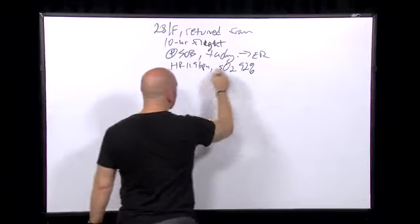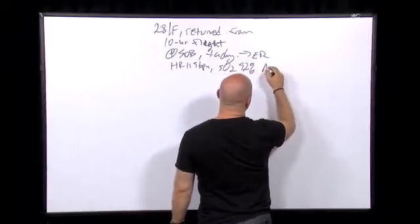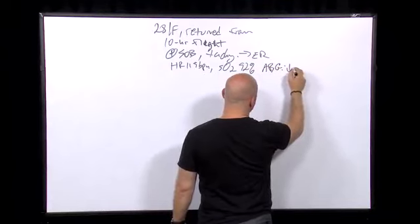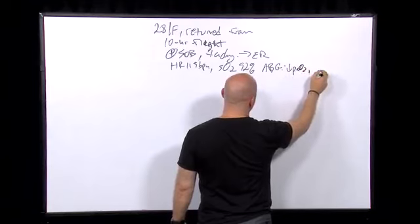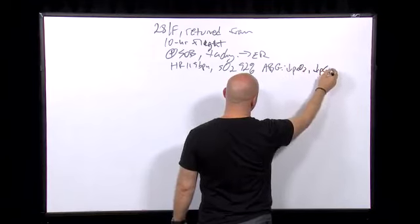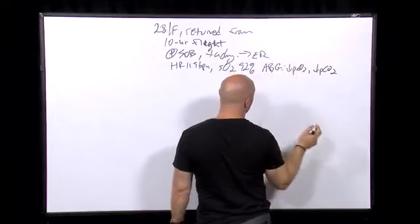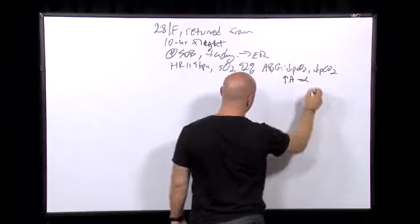And a smart ER doc did an ABG, which shows a low PO2, a low PAO2, because she's tachypneic, right, and she has a high AA gradient.